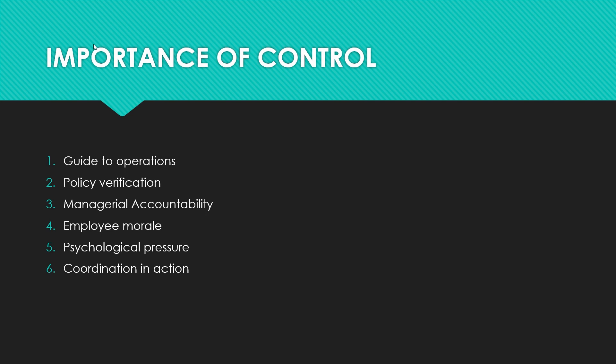Fourth: employee morale — control creates an atmosphere of order and discipline in the organization, which leads to high morale in employees; they will be well-behaved and there will be harmony. Fifth: psychological pressure — the control process applies psychological pressure on subordinates for better performance, inspiring employees to work hard. Sixth: coordination in action — it helps managers coordinate the activities of their subordinates and maintains an equilibrium between ends and means.